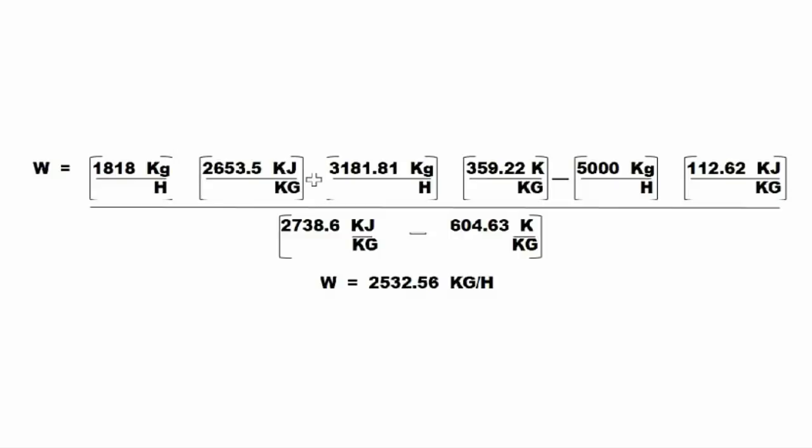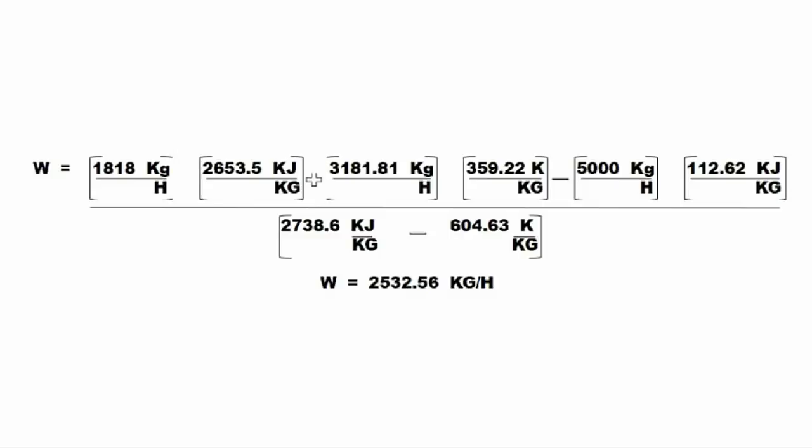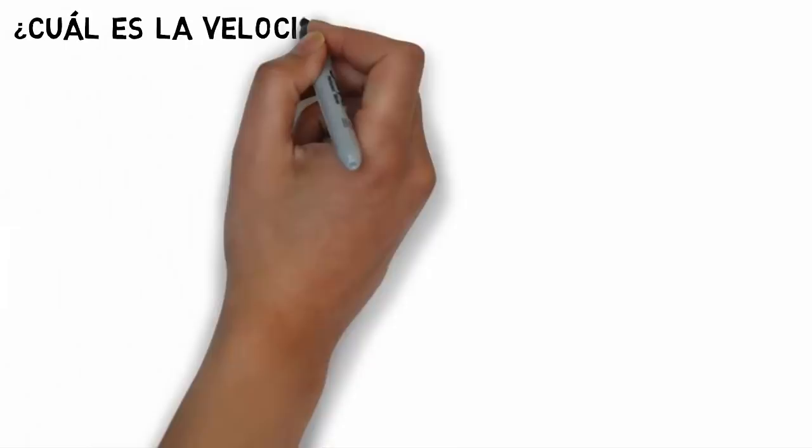The final result is W = 2532.56 kg/h. This is the flow rate at which steam enters the first evaporator.